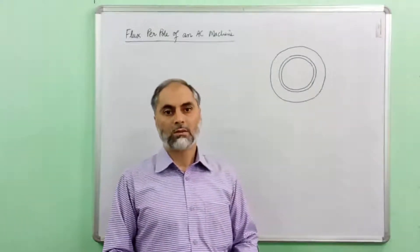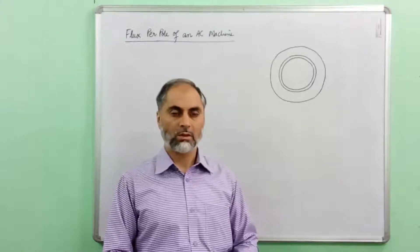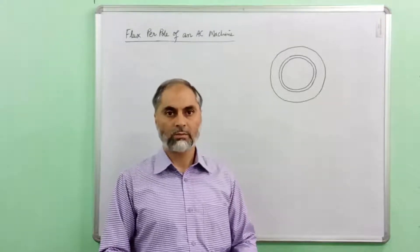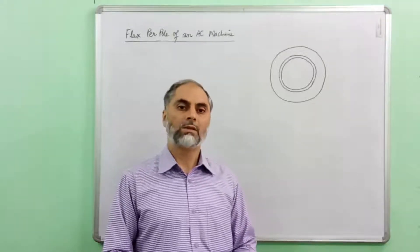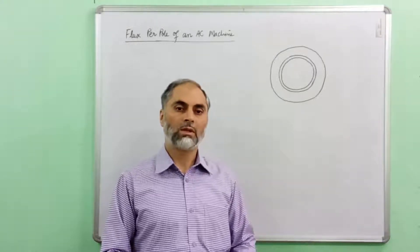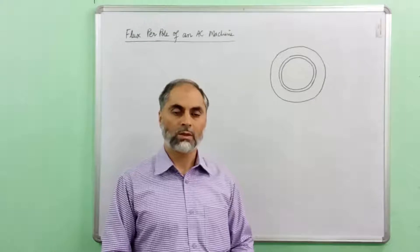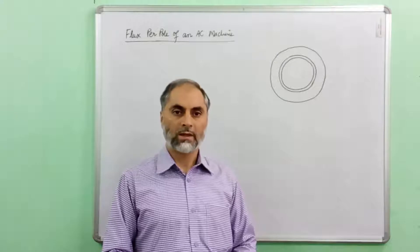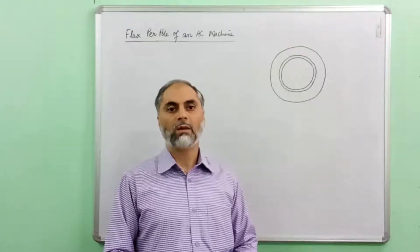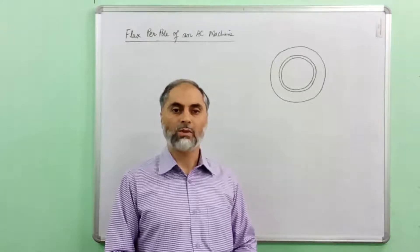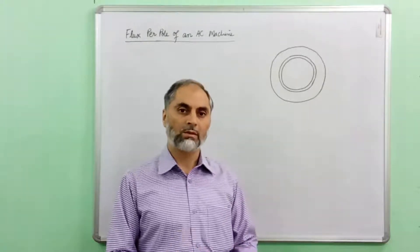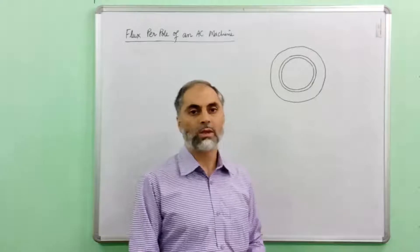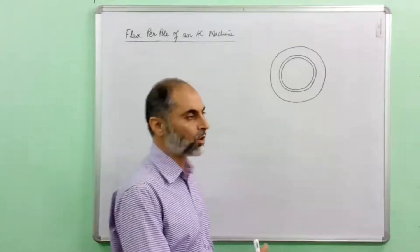We know that the flux density distribution in the air gap of an AC machine has to be ideally sinusoidal. It means that the flux density under a pole is not uniform at each and every point, but the magnetic flux density is maximum along the axis of a pole and then it gradually falls sinusoidally as we move away from the axis on both sides of each pole. Therefore we have a sinusoidally distributed flux density wave in the air gap of the machine.